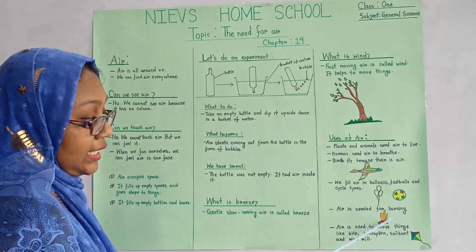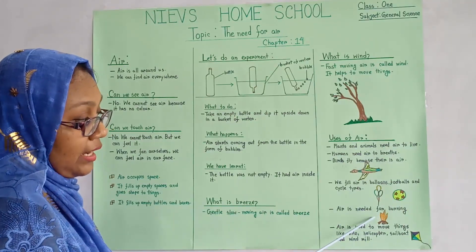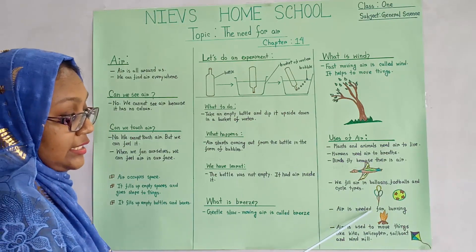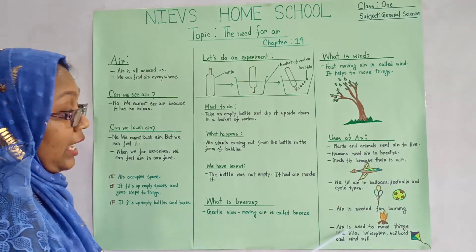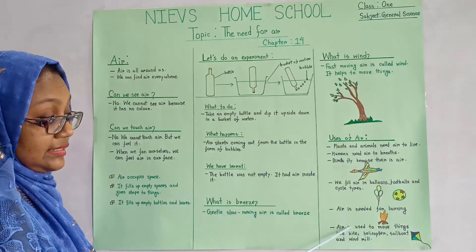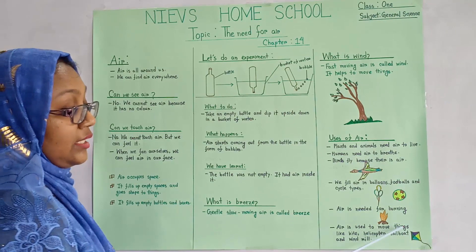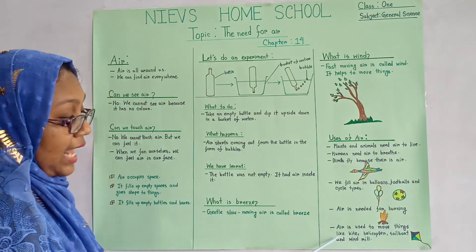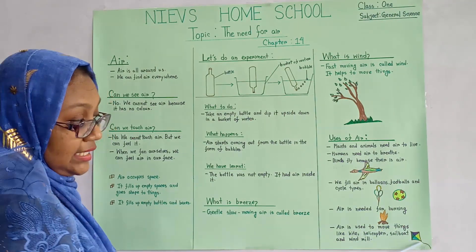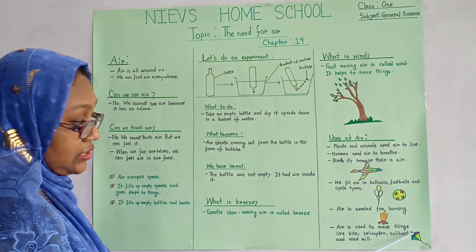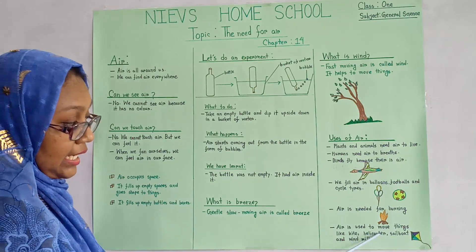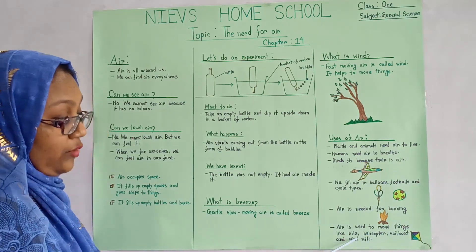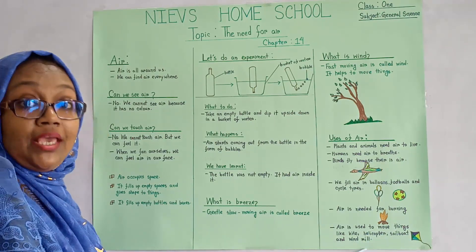Look here, here is a fire. Air is needed for burning. Air is used to move things like kites. Here is a kite. Look — kite, helicopter, sailboat, and windmill.